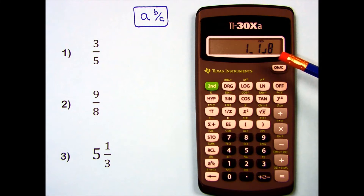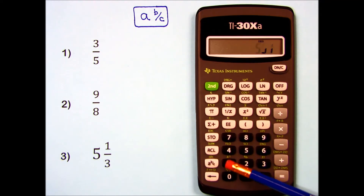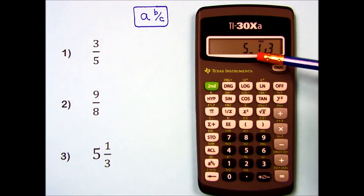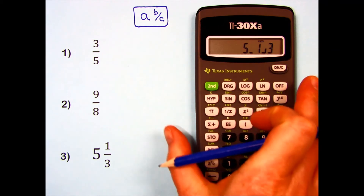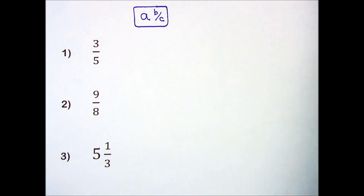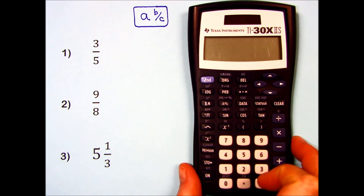To enter a mixed number to begin with, I'll try number 3: 5, fraction key, 1, fraction key, 3. It uses a little dash to indicate that that's between the whole number and the proper fraction. When I hit equals, it just stays the same. Now let's switch to a calculator that has a larger display.